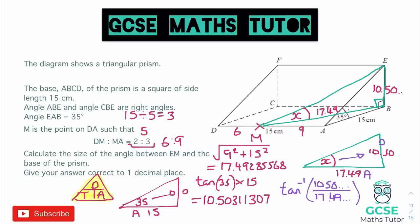10.50311307 on the top and 17.49285568 on the bottom. Have a look back at your calculator and make sure that you've not typed in anything incorrectly because it's very easy to do. And I'm just having a look. I have actually typed something in incorrectly. I put two sevens on the numerator. So we want to delete that and put two ones in there. There we go. So now I have the correct numbers. I'm going to press equals. So I've got my answer. That's come out as 30.9815, and there's a few more decimals.